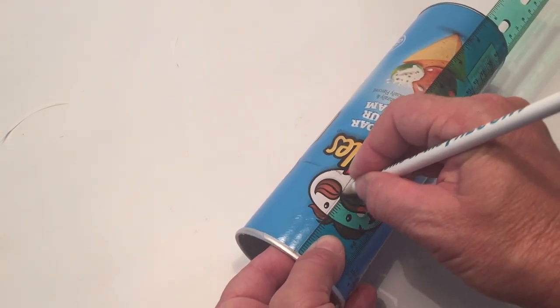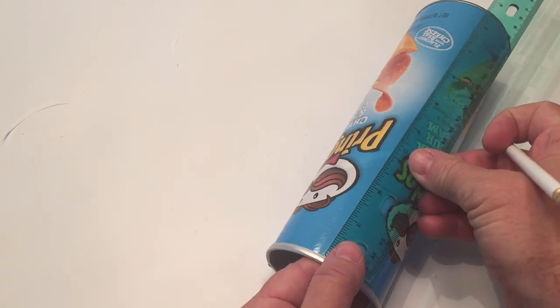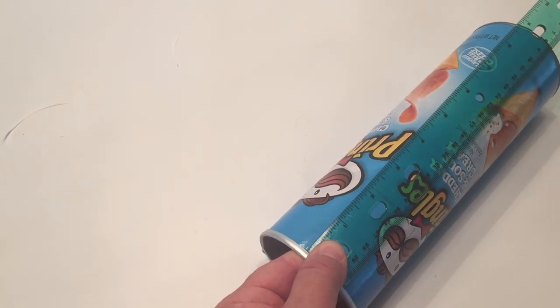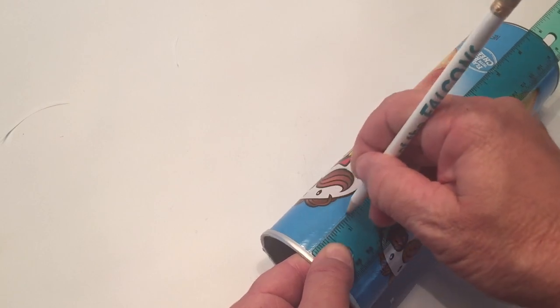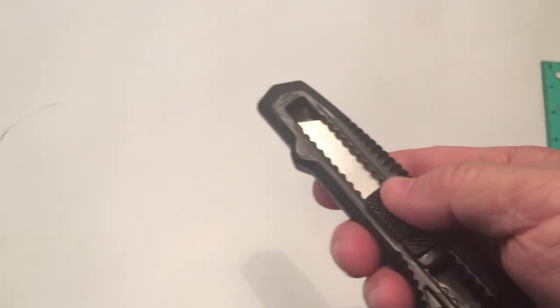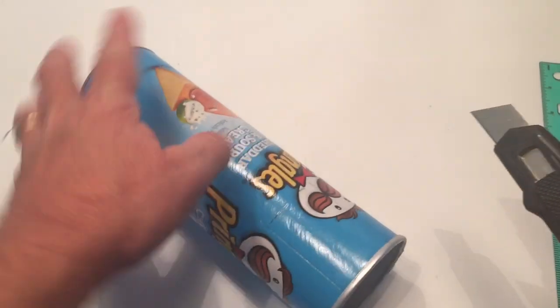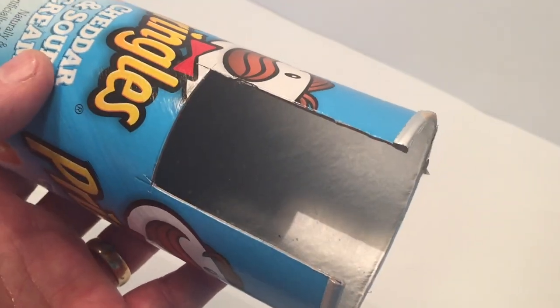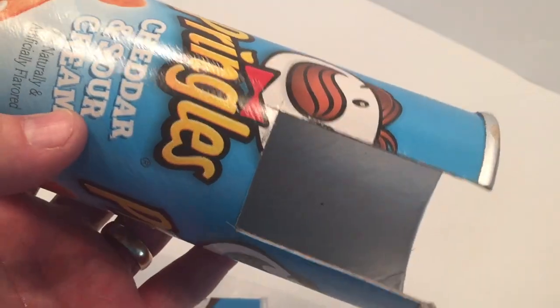So I use a box cutter. You can use scissors. Whatever you do, make sure you have an adult because any sharp objects is dangerous. You have to be very careful with this. And so I take my box cutter. I always find it to be pretty safe using a box cutter, push it out with an adult, and then I always pull away.